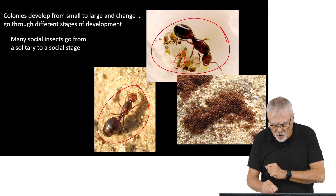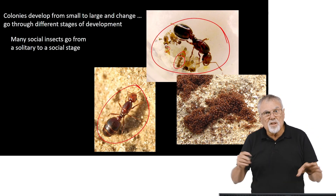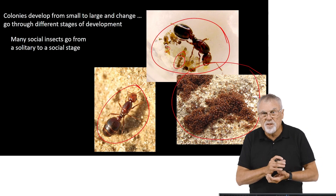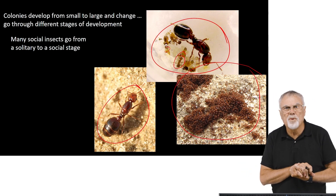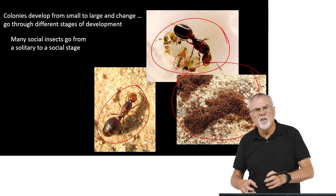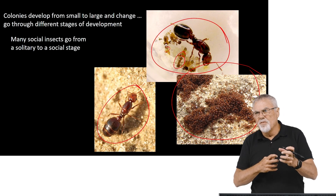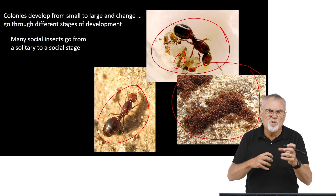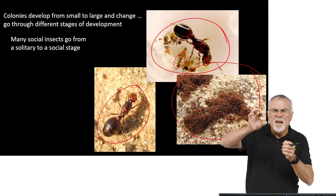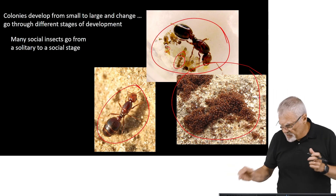Over time, these tiny workers do enough work that they start building the colony — it grows bigger and bigger and can build into something with a large number of individuals. There's specialization of individuals within this group, with differential functions of parts, and different-sized individuals representing different kinds of castes and tasks.